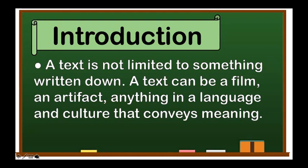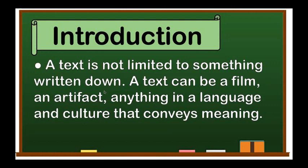Let's go to our first topic: the definition of text. By definition, a text is not limited to something written down. A text can be a film, an artifact, or anything in a language and culture that conveys meaning. Text can have different forms as long as it is used to convey meaning — it can be a film, an artifact, or a reflection of someone's identity.